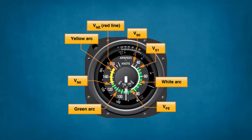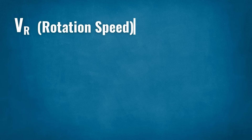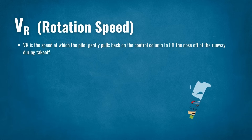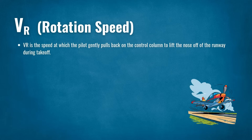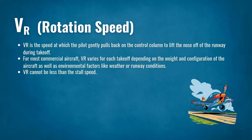Let's take a look at the V-speeds you're most likely to encounter and the ones you should know. VR is the rotation speed — the speed at which the pilot gently pulls back on the control column to lift the nose off the runway during takeoff. For most commercial aircraft, VR varies for each takeoff depending on the weight and configuration of the aircraft, as well as environmental factors like weather or runway conditions. VR cannot be less than the stall speed.